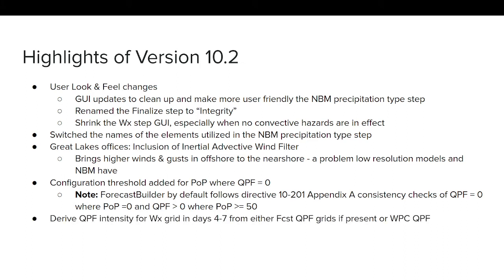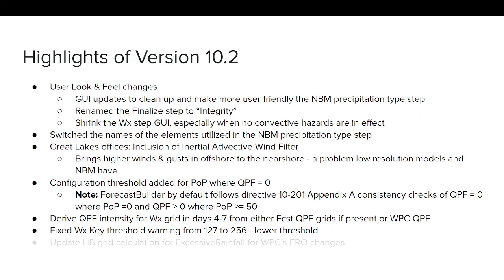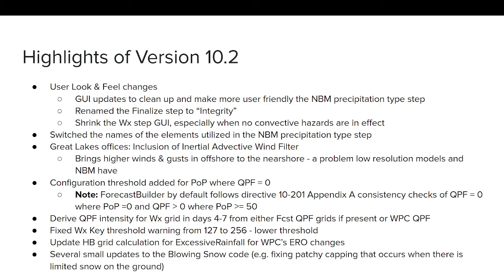To simplify the weather step GUI, we derive the QPF intensity for days four through seven from either the forecast QPF grids if present, or for sites that only do QPF out to day three, it will read in the WPC QPF to help with the intensity calculation. We also fixed a weather key threshold warning that was set at 127, bumping it up to 256 — the maximum GFE can handle. We updated the hazard builder grid calculation for excessive rainfall for WPC's output changes, and made several small updates to the blowing snow code, such as fixing patchy capping when there is limited snow on the ground.